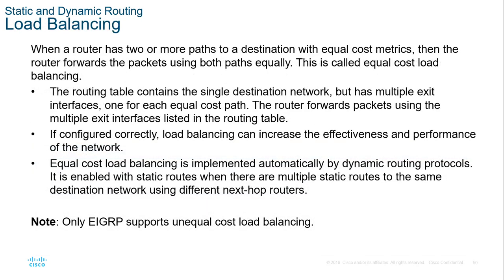Load balancing: EIGRP is one of the only routing protocols that supports unequal cost load balancing, while the rest require equal cost. For example, if you have two WAN connections that are both gigabit, you can load balance egress out of both. If they are not equal, you have to use EIGRP. Typically, you'll find a router with a primary internet connection and a backup internet connection at different speeds, because why would you pay for two active equal-speed connections if one is just a backup?